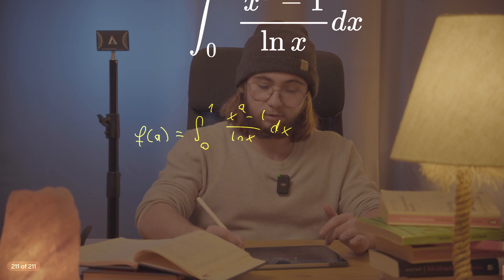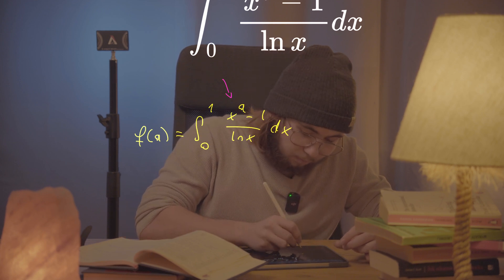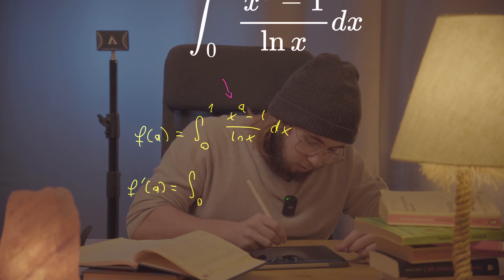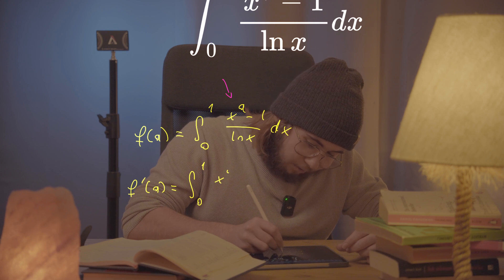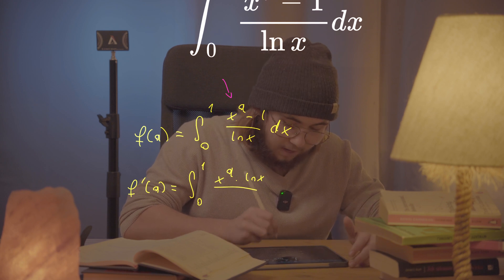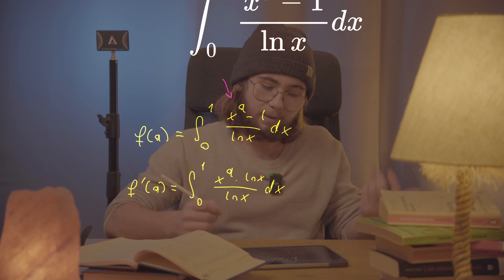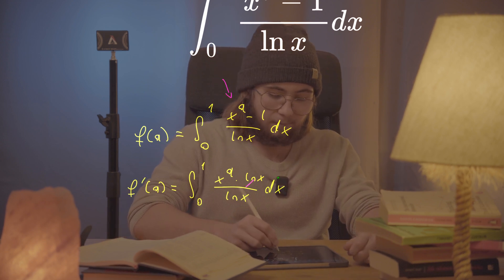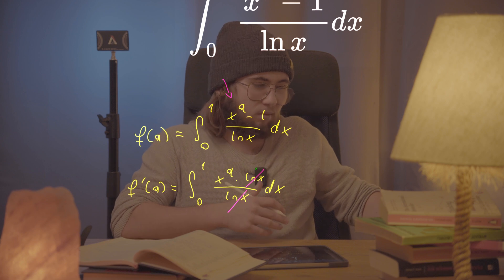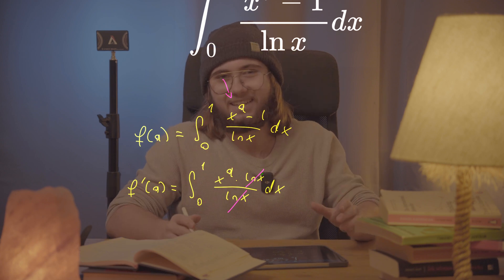I want to take the partial derivative of f(a) with respect to a. What I get is that f'(a) will be equal to the integral from zero to one of x to the power of a times the natural log of x — the derivative of the negative one is just zero — and the natural log of x in the denominator cancels. My ln terms cancel each other out, which is lovely. But why is this even helpful — I've got a derivative of some function in terms of another variable.